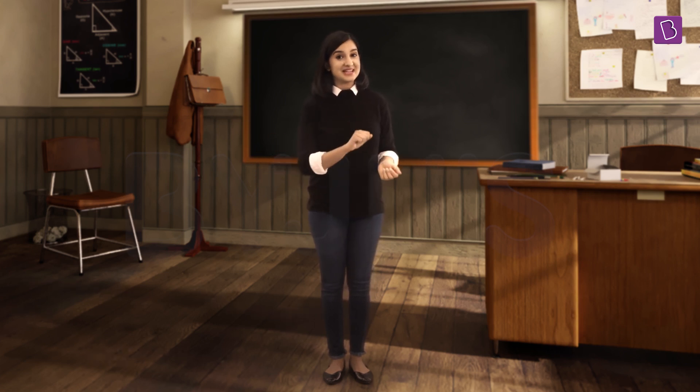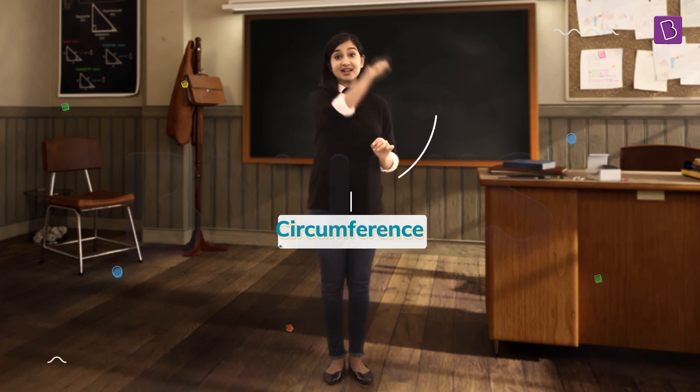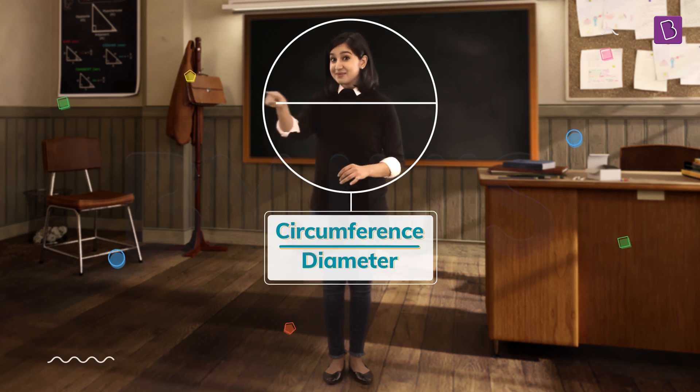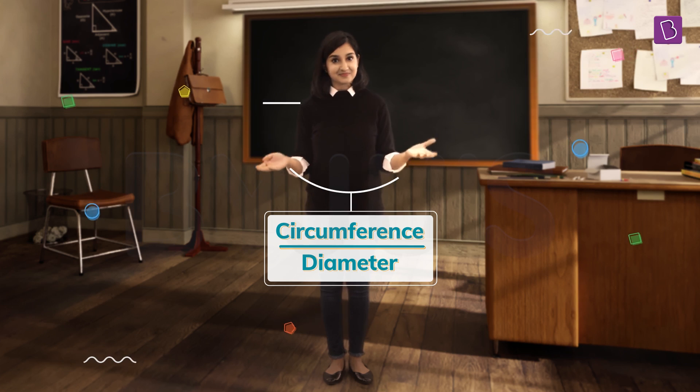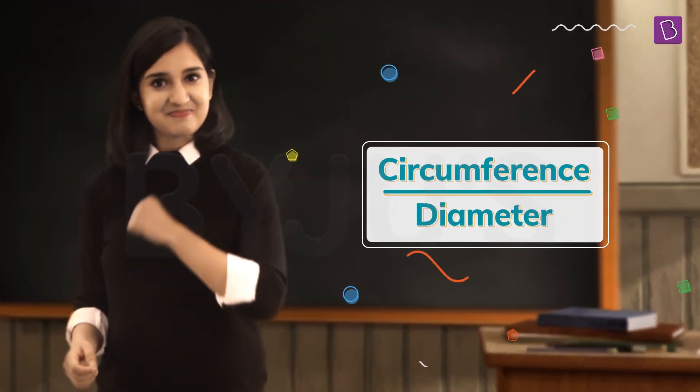Well, there is a way if you know the diameter of the circle. Mathematicians have found out that when we take the ratio of the circumference to the diameter, we always get the same answer: pi.